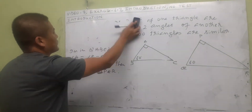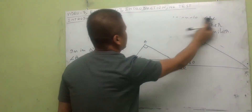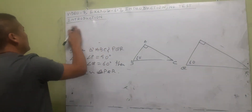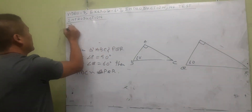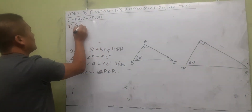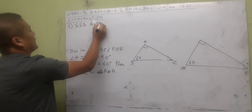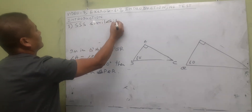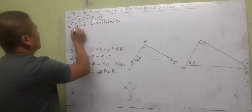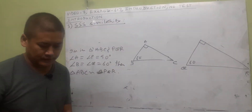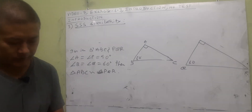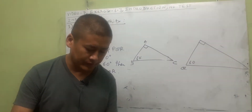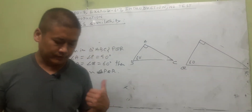There are four similarity conditions for triangles under this exercise. We have AAA, Double A, and then the third one is SSS Similarity — Side Side Side. Write it down.